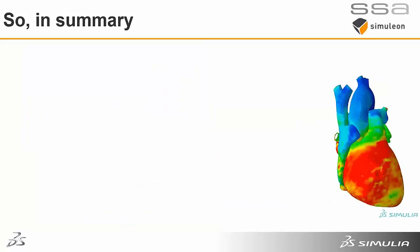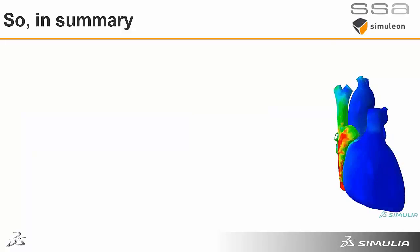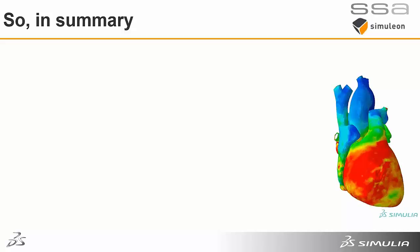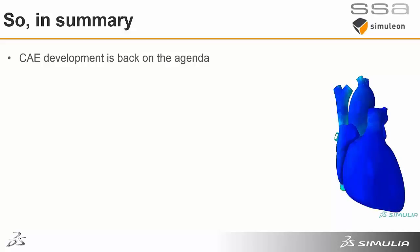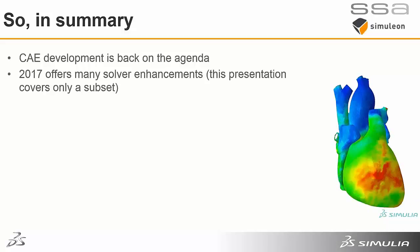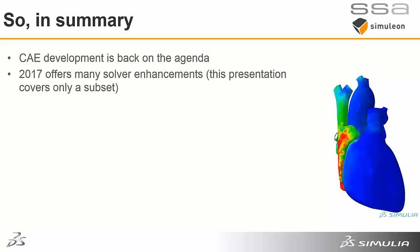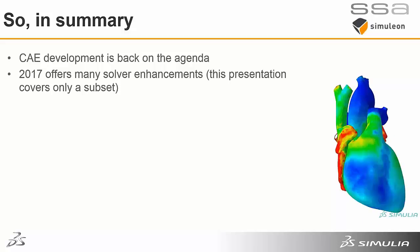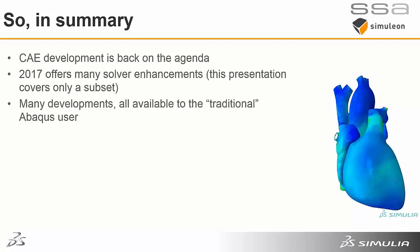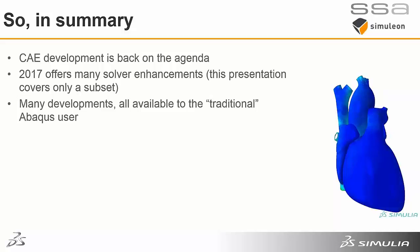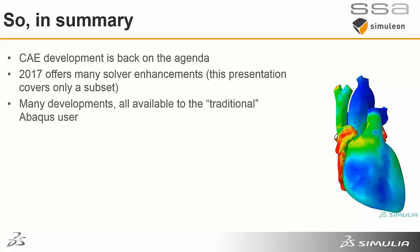In summary, 2017 increasingly looks like a very important release. There are a number of technical themes around multi-scale modeling, enhancements to contact, and a number of other themes. The significant point is that we're starting again to see developments back on the CAE interface which most Abacus users tend to use. There have been significant solver enhancements in 2017 — a lot of science, a lot of physics, and a lot of solver development — pointing to a product being actively developed as a solver engine. Contrary to a viewpoint many people may have developed over the last couple of years, all of these solver developments are available in the CAE environment to a traditional Abacus user.